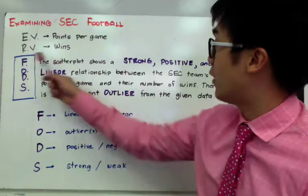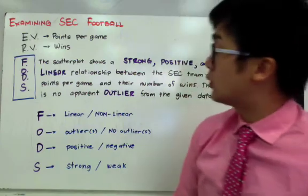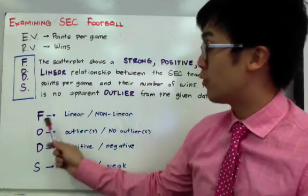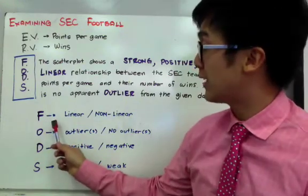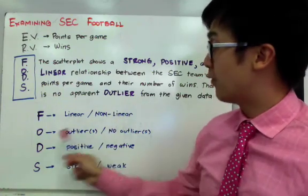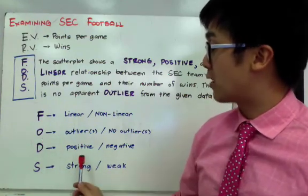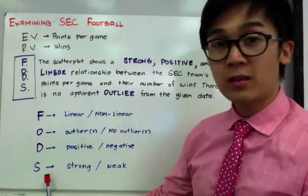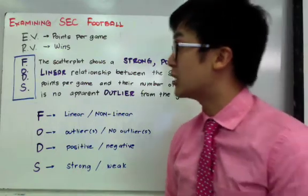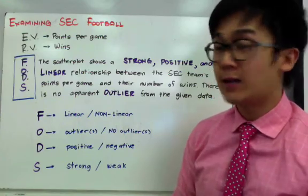We are mentioning the FODS by strong, positive, linear, and no apparent outlier. Now, to be able to interpret FODS, there are some options here that you will consider. So for the form, all you need to do is to see or check at your graph or scatterplot if it's linear or non-linear. For outliers, you just need to check if there is an existing outliers or not. And for the direction, it could either be positive or negative. And for the strength of your relationship, it could either be strong or weak. And this is how we describe or interpret the relationship between two quantitative data sets in this particular chapter.